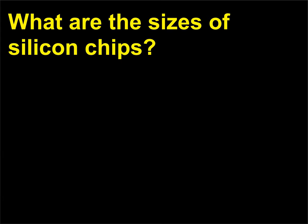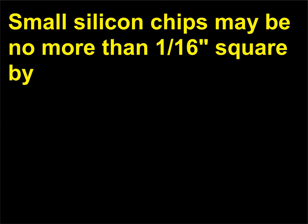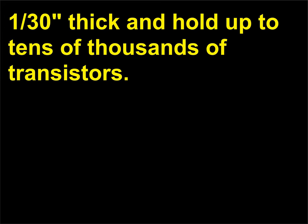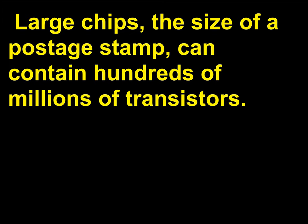What are the sizes of silicon chips? Small silicon chips may be no more than 1/16th inch square by 1/30th inch thick and hold up to tens of thousands of transistors. Large chips, the size of a postage stamp, can contain hundreds of millions of transistors.